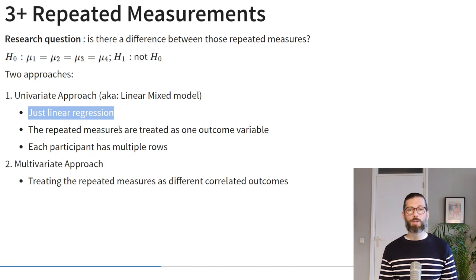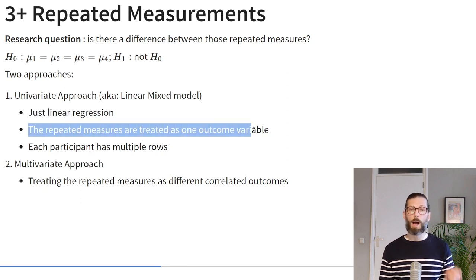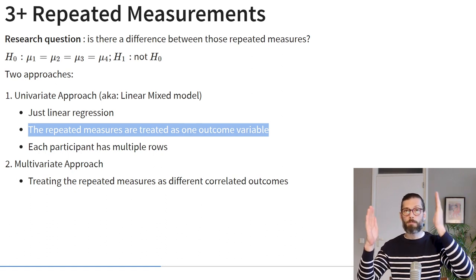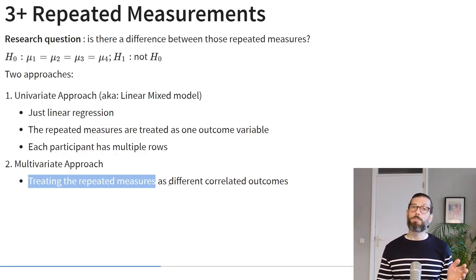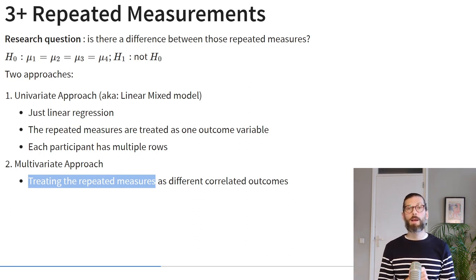We could take two approaches. The univariate approach is equivalent to a linear mixed model — we use linear regression and treat the four repeated measures as a single outcome variable, meaning every participant has four rows of data. So we start with four columns for the four measurement occasions and stack them, because they're all the same variable, while accounting for the effect of time. The second approach is the multivariate approach, where we still treat the four measures as different outcomes but treat them as correlated outcomes.